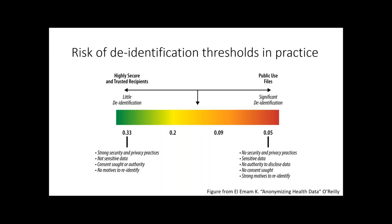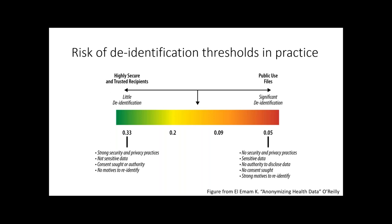Regarding the threshold for tolerable re-identification risk, we have data from past clinical trials published in the literature. The threshold ranges between 5% and 33%. In the worst-case scenario — when data is publicly available with highly sensitive information — the threshold is set at about 5% applied to a single person in the database. For cases in a highly secure scenario with trusted recipients and less sensitive information, you can allow up to about 33%.